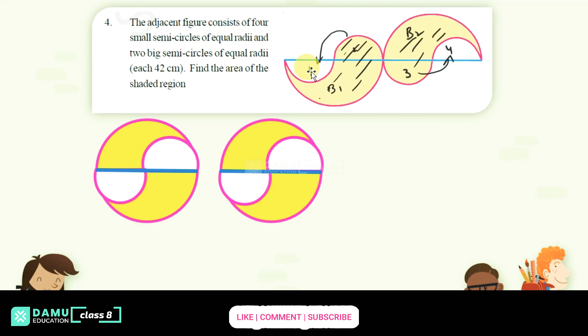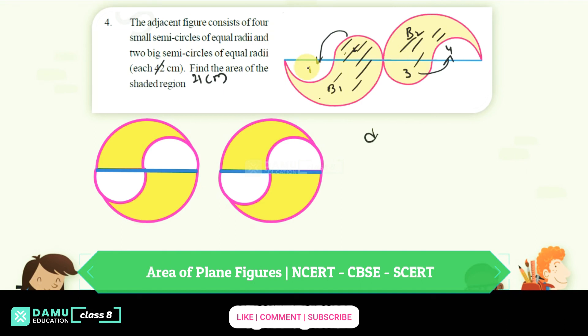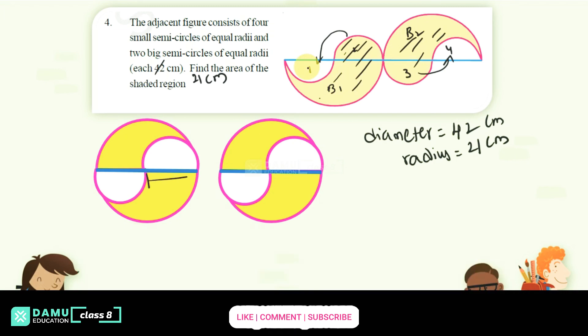Here 42 centimeter is given for the bigger semicircle, but actually this is not the radius, this is 21 centimeter. Actually 42 is the diameter. If diameter equals 42, then radius equals 21 centimeters. From here to here for the bigger circle, this is 21 centimeters.